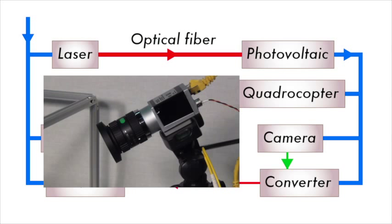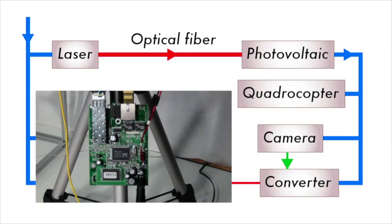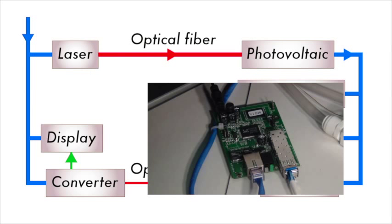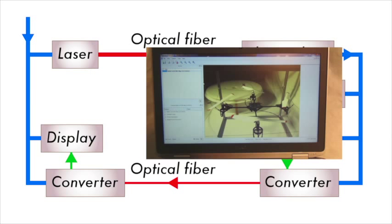This Ethernet video camera streams its output to a board which transmits the data signal via a second yellow fiber optic cable. At the other end, another board converts the signal back to Ethernet, which is then displayed on a laptop.